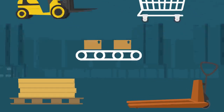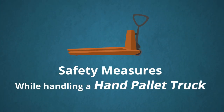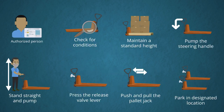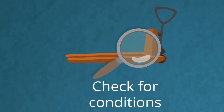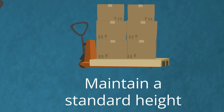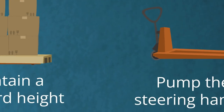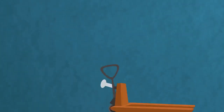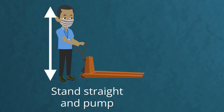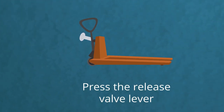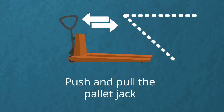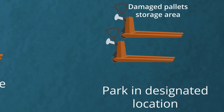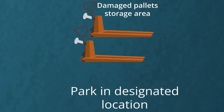Safety measures for the hand pallet truck: only authorized persons should operate it. Check the condition of equipment before using. Don't overload — maintain standard height to avoid material falling off. Pump the steering handle to lift the fork, standing straight and using both hands until the pallet is off the ground. Press the release valve lever trigger to lower the fork — ensure no body parts or material are below. You can push or pull a pallet jack depending on how you need to maneuver it; ensure vision and pathway are clear. Park the hand pallet truck in a designated location only and don't obstruct the pathway.